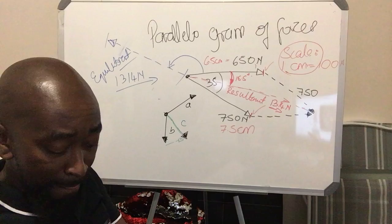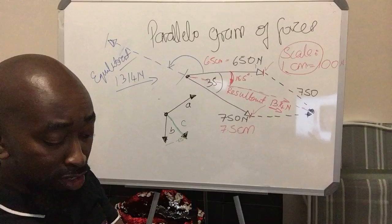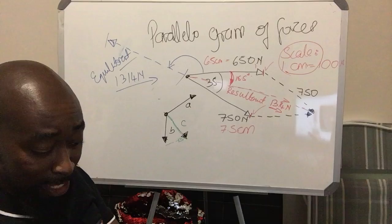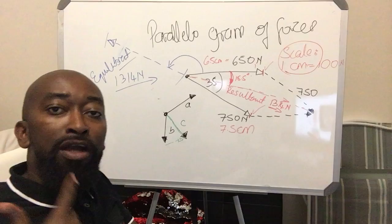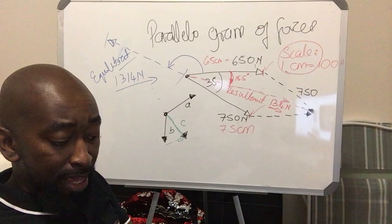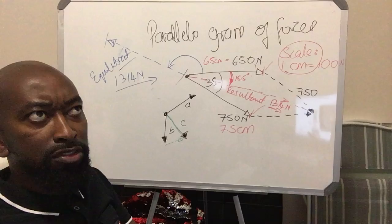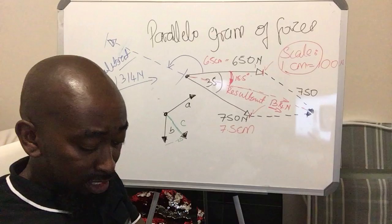You need to understand what VR — velocity ratio — is: the definition and how to apply it. You also need to understand what a wheel and axle is about. My favorite topic: moments. What is a moment? Page 36 explains everything. A moment is a force — a perpendicular force — that produces a turning effect about a point.